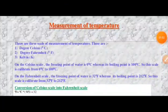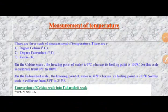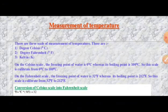In the last class you studied the different scales for measuring temperature. The three scales of measurement are degree Celsius, degree Fahrenheit, and Kelvin. On the Celsius scale, the freezing point of water is 0 degree Celsius, whereas its boiling point is 100 degree Celsius. So this scale is calibrated from 0 degree Celsius to 100 degree Celsius.